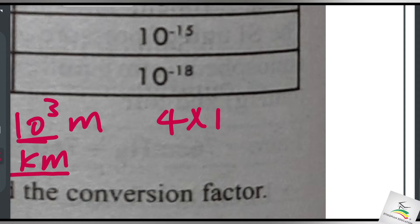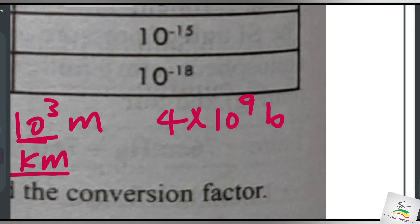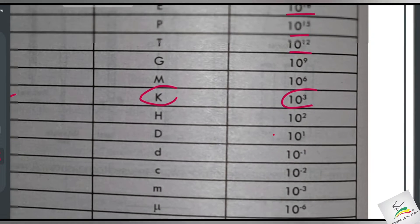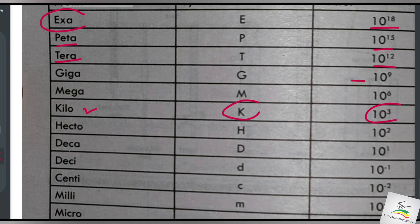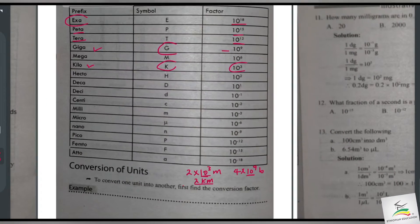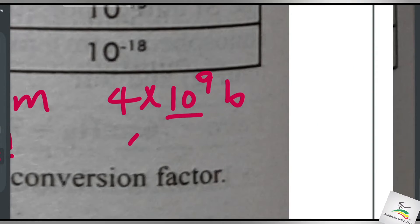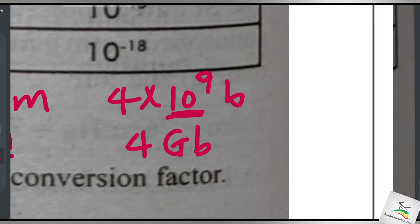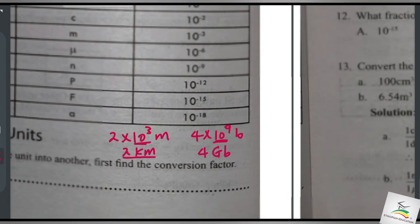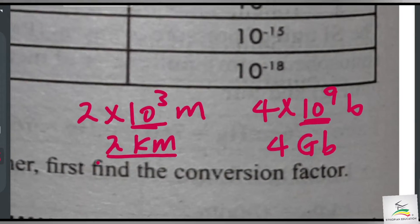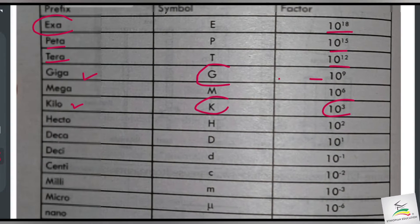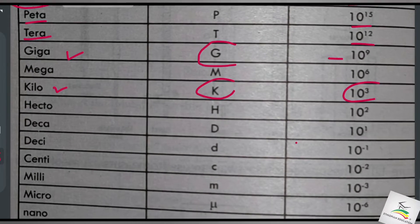Four times ten to the power of nine — the prefix for ten to the power of nine is giga. So four gigabytes is four times ten to the power of nine bytes. Giga is ten to the power of nine.